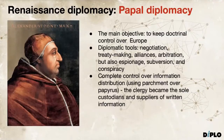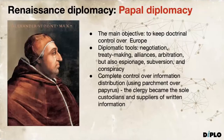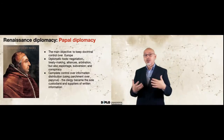Let's focus on papal diplomacy. One of the main diplomatic traditions developed in the Middle Ages were papal diplomats representing the Vatican. The Vatican's main objective was to keep doctrinal control over Europe and to suppress any action aimed at challenging the role of the Roman Catholic Church. Papal diplomats used a variety of diplomatic tools such as negotiation, treaty making, alliances and arbitration, and also developed considerable expertise in espionage, subversion and conspiracy.